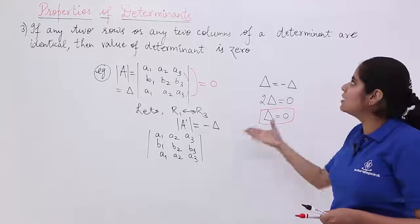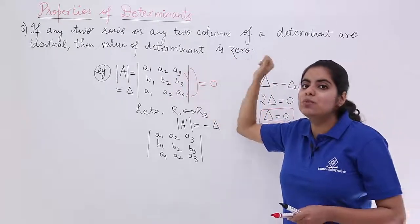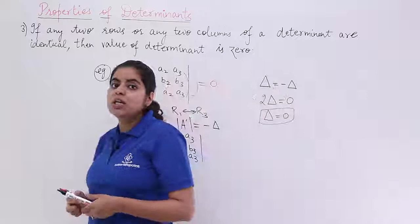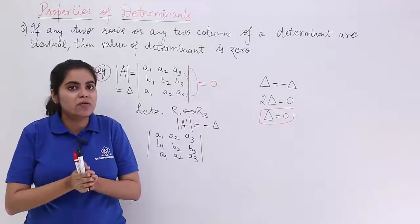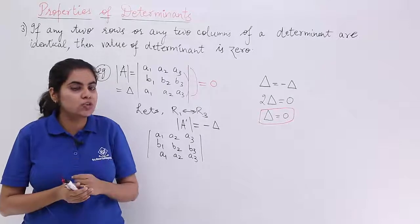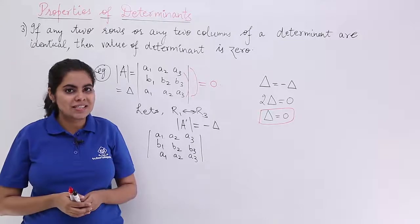And that is what is said that if any two rows or columns are identical in the determinant, the value comes out to be 0. So this property is called as property number 3. And it says that if any two rows or any two columns of any determinant are same, the value of the determinant is 0.